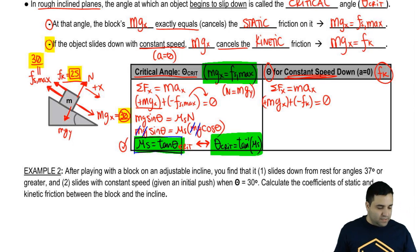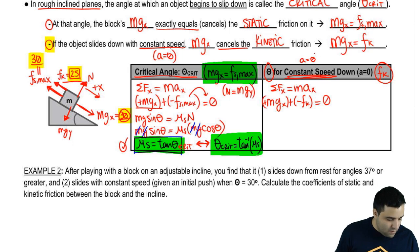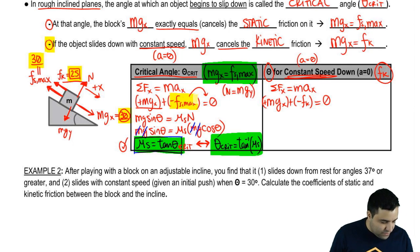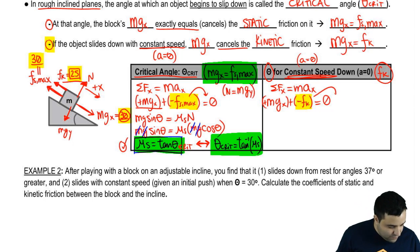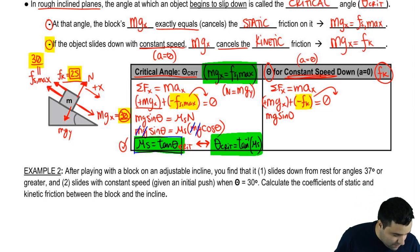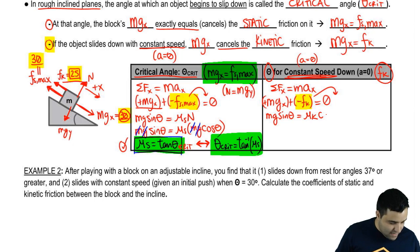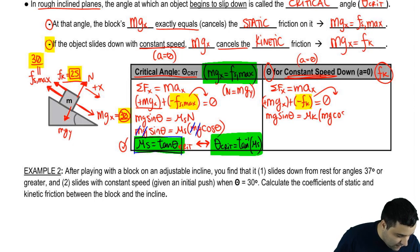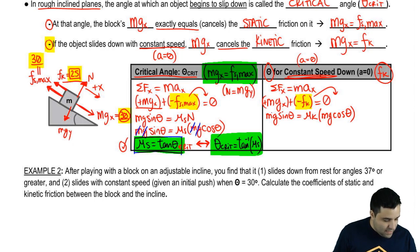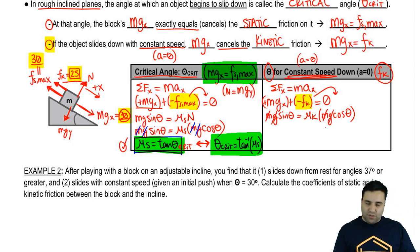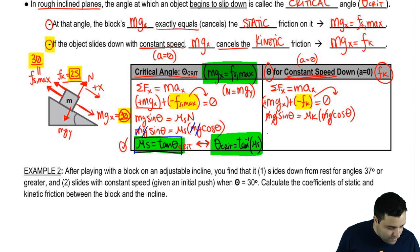The acceleration is still zero because it's a constant speed. The setup is exactly the same as before, except here it's kinetic friction instead of static friction max. Expanding: MG sine theta equals mu-kinetic times normal, which is mu-kinetic times MG cosine theta. MG cancels again.